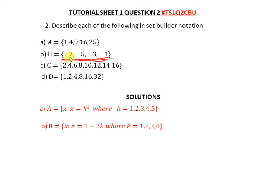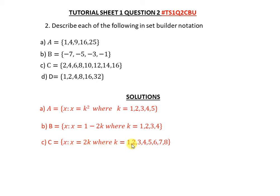For part C, these are even numbers less than 17. You can say x is such that x is a set of even numbers, or x is a member of even numbers less than 17, or between 0 and 17. Alternatively, x = 2k where k = {1, 2, 3, 4, 5, 6, 7, 8} — all of these would be marked correct.